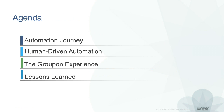We will start our webinar with Juniper's vision of an automation journey. Nathan will provide an in-depth discussion on human-driven automation, including an automation toolkit for network configuration and management. This is to be followed by Alejandro, where he will share with us his network automation experience at Groupon. We'll wrap up our webinar today with some key lessons learned.